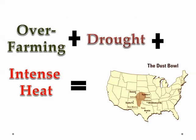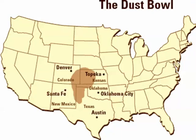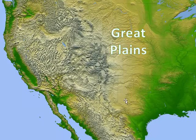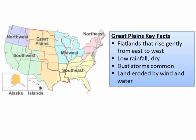These extremely dry conditions, combined with wind and drought, created the Dust Bowl. Over-farming, drought, intense heat, and winds caused the Dust Bowl to happen across about five states in the Great Plains. Here's a map of the Dust Bowl area. The Great Plains rise gently from east to west, from the Mississippi and Missouri Rivers toward the Rocky Mountains, and it's right in this region where the Dust Bowl occurred.